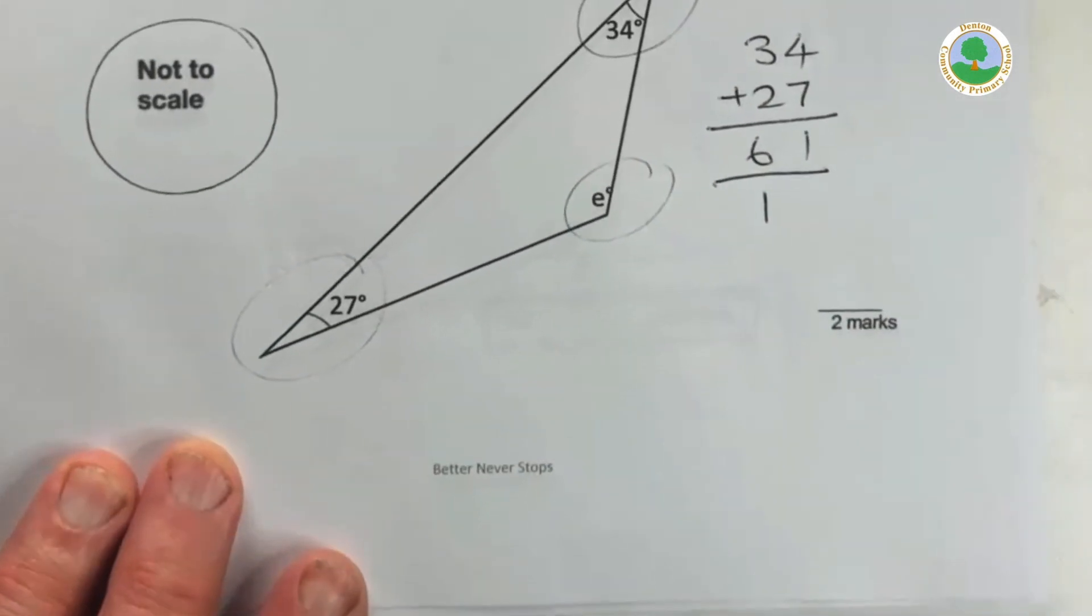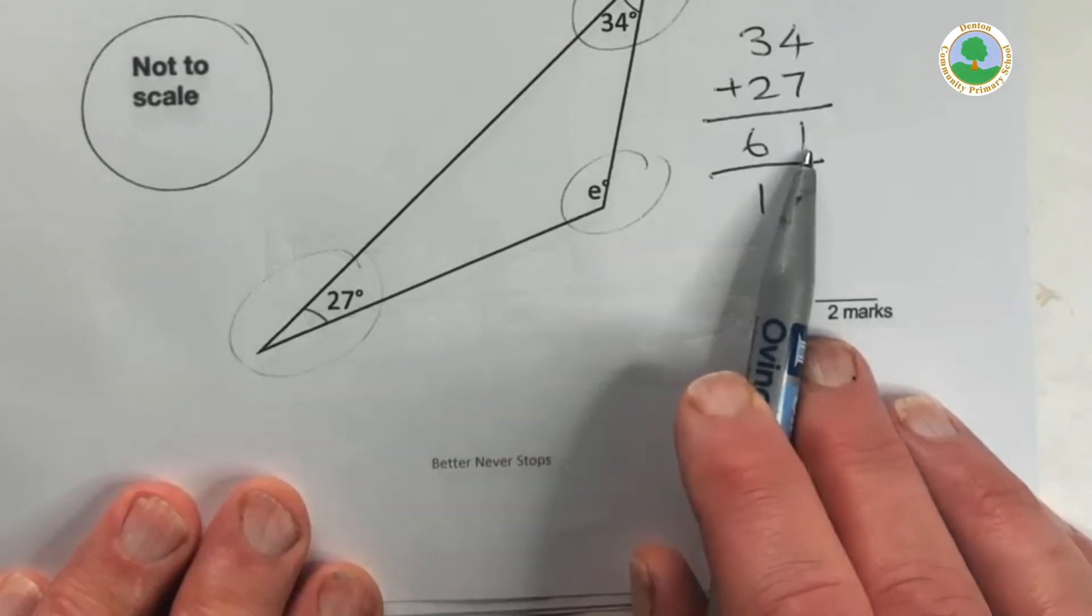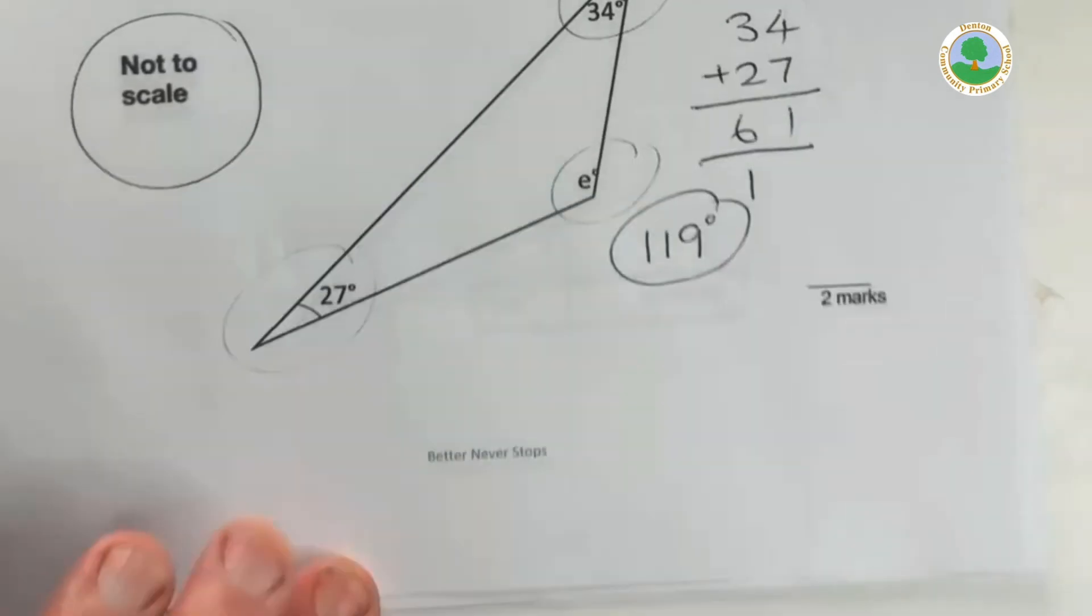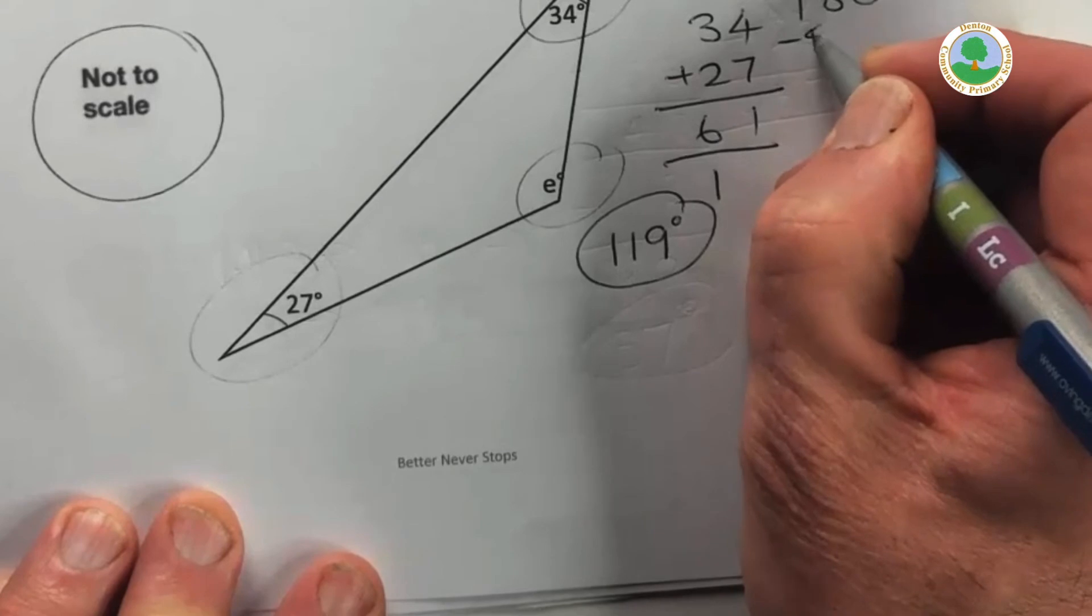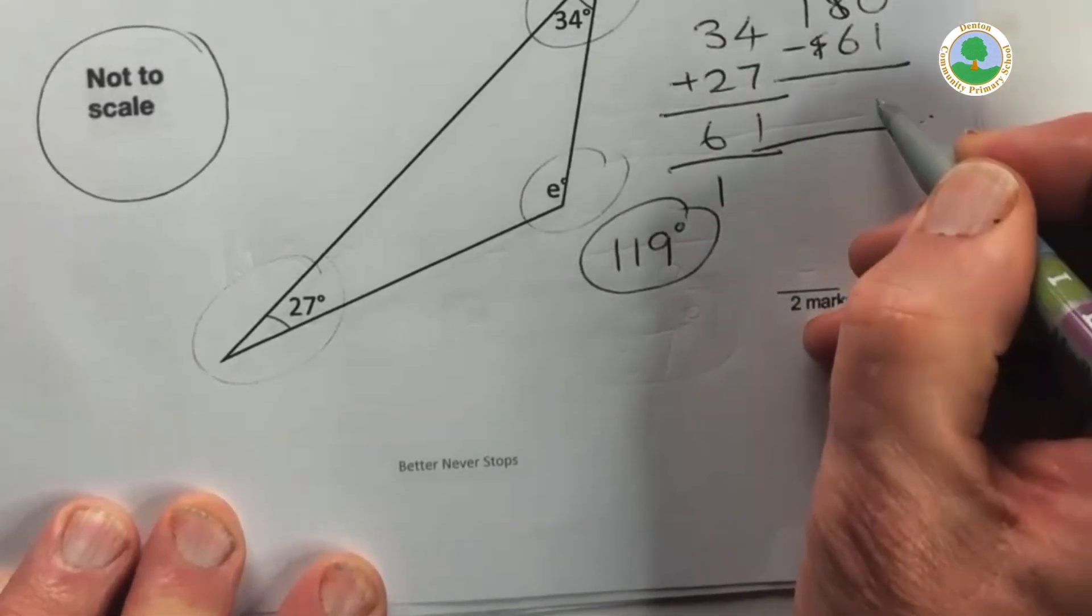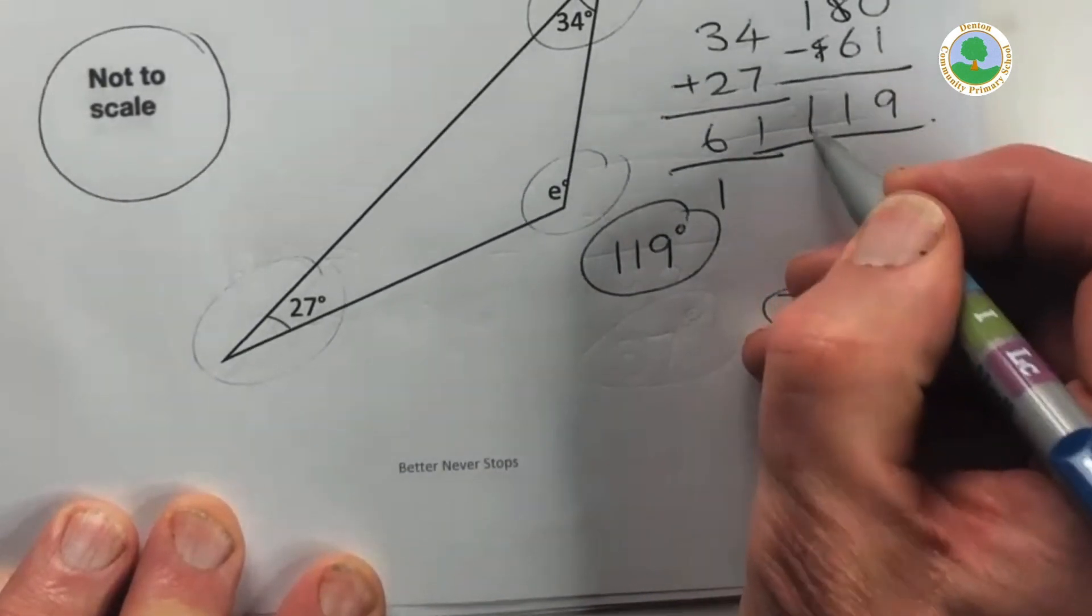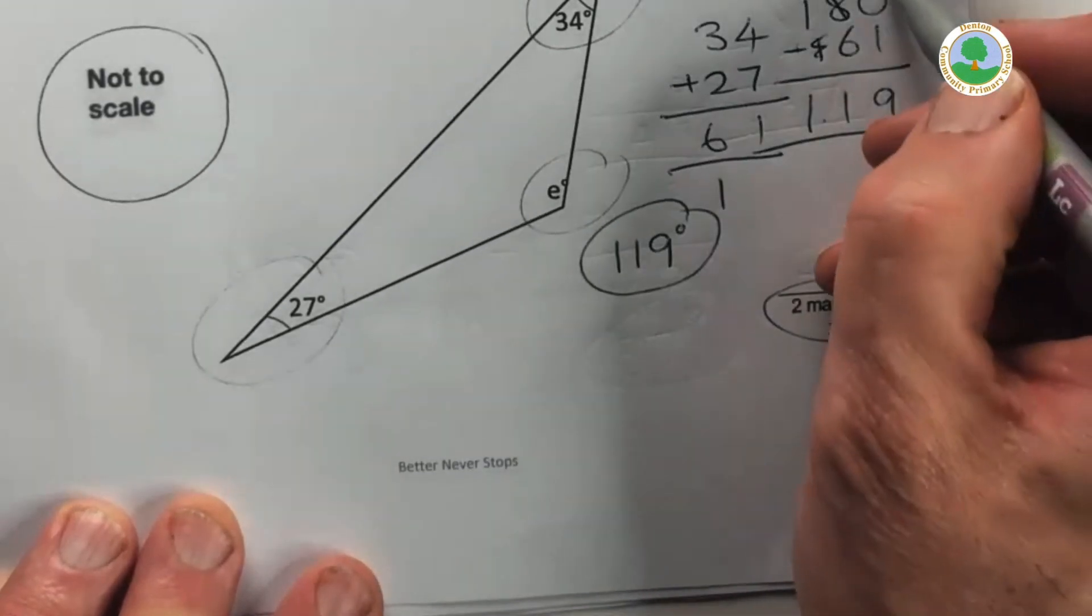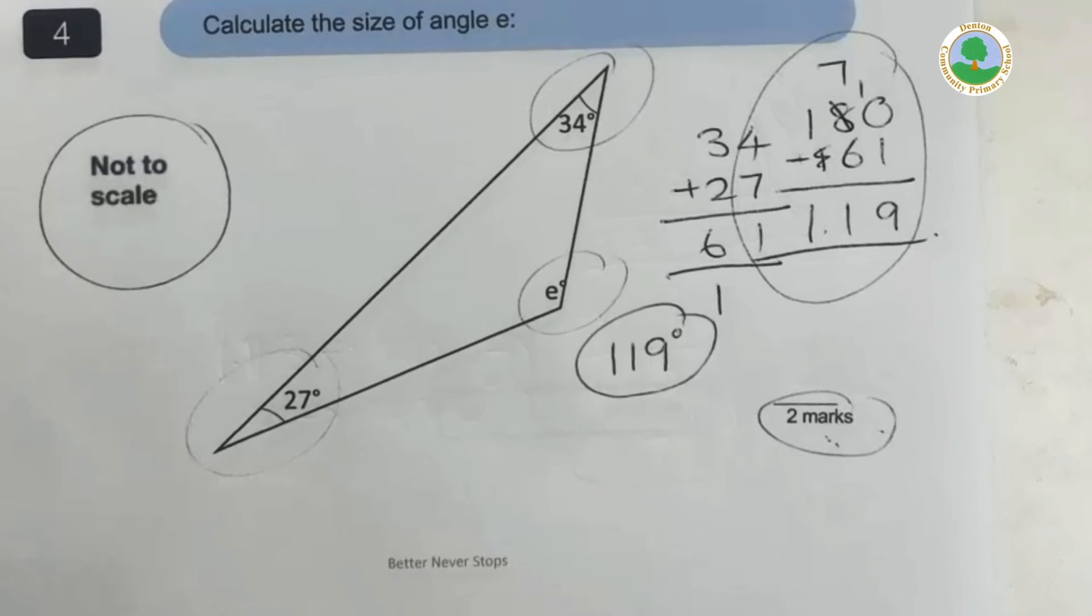So we do exactly the same thing. I've got 34 and 27. Those are the two angles I have at the moment, giving me 61. If that was 60, I'd need another 120. But because it's a little bigger, I'm going to go for 119 as the answer. But again, remember what we said. If you're in any doubt, just play safe. Just do the subtraction. Okay. And especially on a two mark question. Especially on a two mark question. Because if you make a mistake, you might still get a mark for your working. Got to be smart.